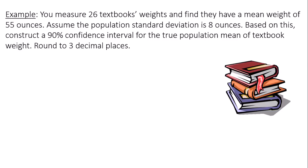You measure 26 textbooks' weights and find they have a mean weight of 55 ounces. Assume the population standard deviation is 8 ounces. Based on this, construct a 90% confidence interval for the true population mean of textbook weights. Round to three decimal places.